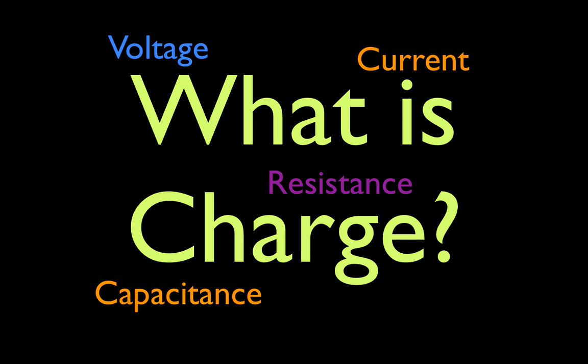A lot of times I see people doing calculations getting the right answers, but I'm never quite sure that they understand exactly what charge or current is — especially when working with Ohm's law: V equals I times R, voltage equals current times resistance, or what I like to call the capacitor equation: Q equals C times V, charge equals capacitance times voltage. That's what we're going to talk about, so you have some idea when you say an object has a certain amount of charge.